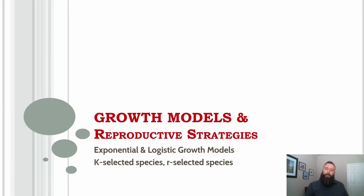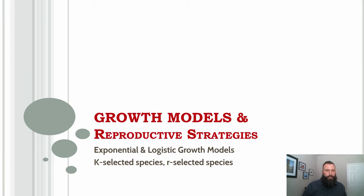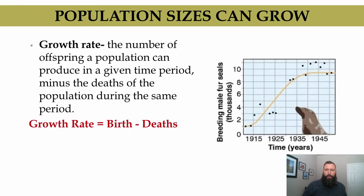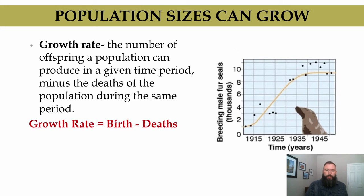In this video we're going to talk about population growth models, and we'll discuss reproductive strategies of K-selected and R-selected species. The growth rate refers to the number of offspring a population can produce in a given time period, minus the deaths of the population during the same period.